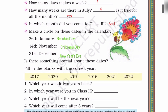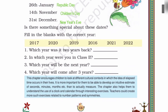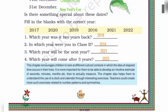Fill in the blanks with the correct year. Which year was it 2 years back? We have to do for 2020. 2 years back: 2018. In which year were you in class 2? 2019. Which year will be the next year? 2021. Which year will come after 3 years? 2021, 2022, and 2023.